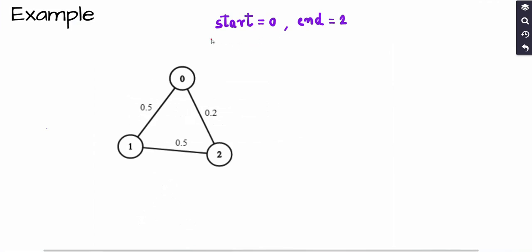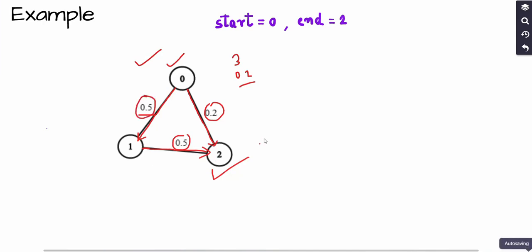Let's understand the problem using an example. Here we have a graph with three nodes labeled 0 to 2. The start node is node 0 and the end node is node 2. One path from 0 to 2 is a single edge with probability 0.2. Another path is to move from 0 to 1 with probability 0.5, then from 1 to 2 with probability 0.5. The overall probability for consecutive edges is computed by multiplying the probabilities, giving 0.5 × 0.5.